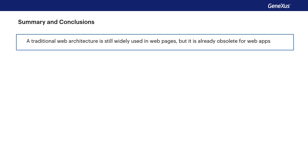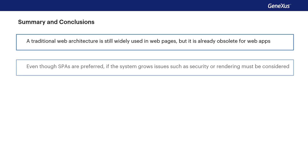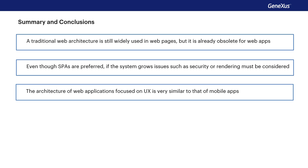To sum up what we've seen: while traditional web architecture is still widely used for web pages, this is not the case for web applications, where it's considered obsolete. While single page applications have been a market trend, they can be problematic if the system grows, because the client becomes too heavy, and also due to security considerations. The architecture of high performance applications uses REST services on the server, as do mobile applications, and in both cases the data is updated in response to client events.